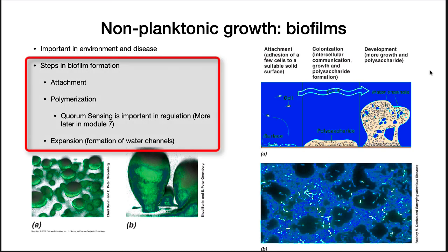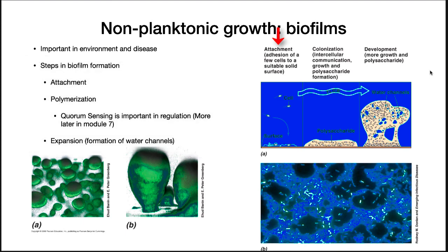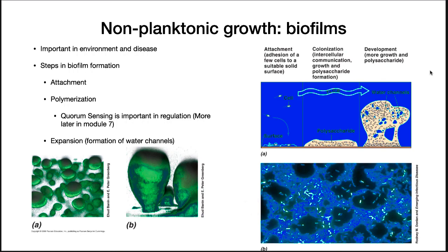Biofilm formation occurs in three steps. First, cells attach to a surface. As their numbers increase, their quorum sensing mechanisms detect the population increase, and cells turn on genes that synthesize a polysaccharide matrix. A sticky mass of cells proliferates, and the biofilm expands, forming water channels. The figure on the side shows a biofilm from a top-down view and a side view. A cross-section of a biofilm is shown in the fluorescent microscope. You can see the individual cells embedded in the matrix.